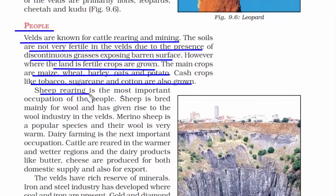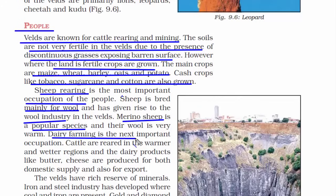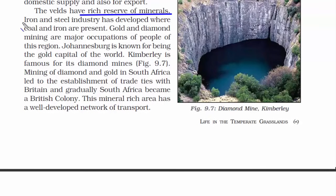A very common occupation for the people of this place is sheep rearing, mainly for wool — and the wool industry is very famous here. Merino sheep is a popular species and their wool is very warm. After sheep rearing, dairy farming is the next important occupation. Dairy products like butter and cheese are produced for both domestic use and export. This place is also rich in reserves of minerals like coal and iron, important for the iron and steel industry. Gold and diamond mining are also a major occupation.